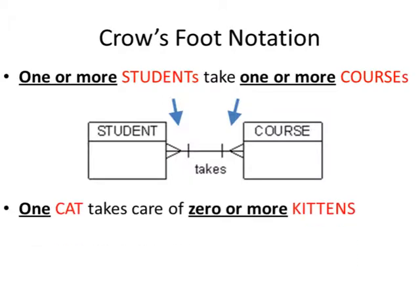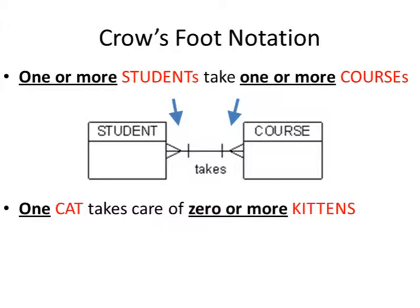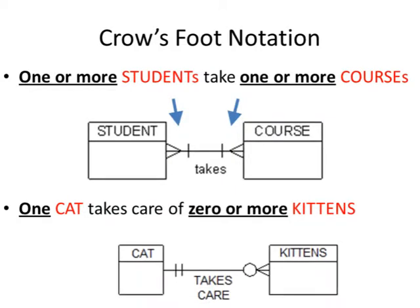The last operation in Crow's Foot Notation is the one-to-zero-or-more relationship. In this example, we have the Cat table and the Kittens table, where one cat takes care of zero or more kittens. The one cat is represented by two vertical lines, and zero-or-more kittens are represented by a zero symbol and a triangle.